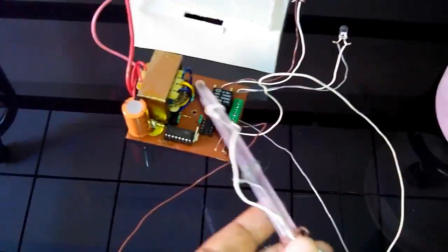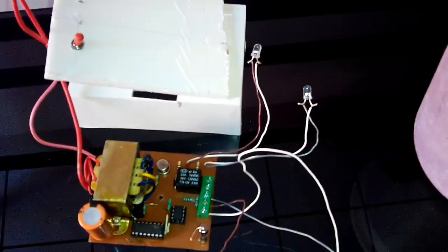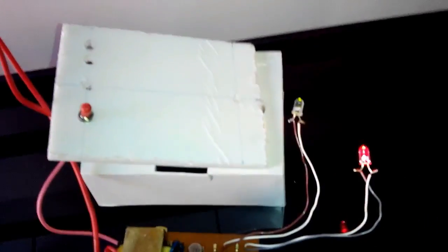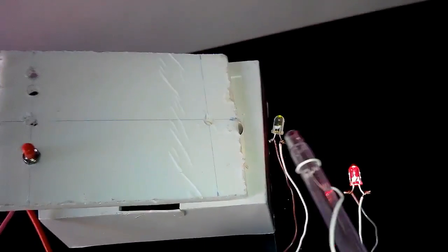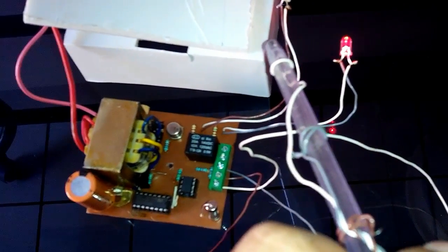Now we will test it. We will switch it on and power it on. When we power on, we can see these two LEDs are glowing. This green LED represents power, and this red LED shows that the pump is on because these two sensors are out of water and exposed.